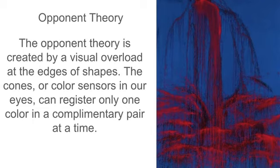The opponent theory is created by a visual overload at the edges of shapes. The cones, or color sensors in our eyes, can register only one color in a complementary pair at a time. That's why the colors in this painting by Pat Stier seem to bounce off of each other and vibrate, because they are almost complementary, and our eyes can't handle looking at both right next to each other at the same time. That's why they have these vibrating edges.